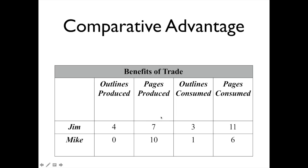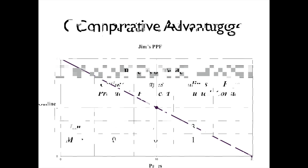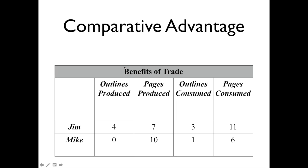Now we engage in trade. Jim produces four outlines and seven pages; Mike specializes in making pages and produces 10. They're going to trade one outline for four pages. So one of Jim's outlines goes to Mike — Jim's outlines go from four to three, and Mike goes from zero outlines to one outline. In exchange for that outline, Mike trades four of his pages to Jim. Mike's page consumption goes from 10 to six, while Jim's goes from seven to 11.